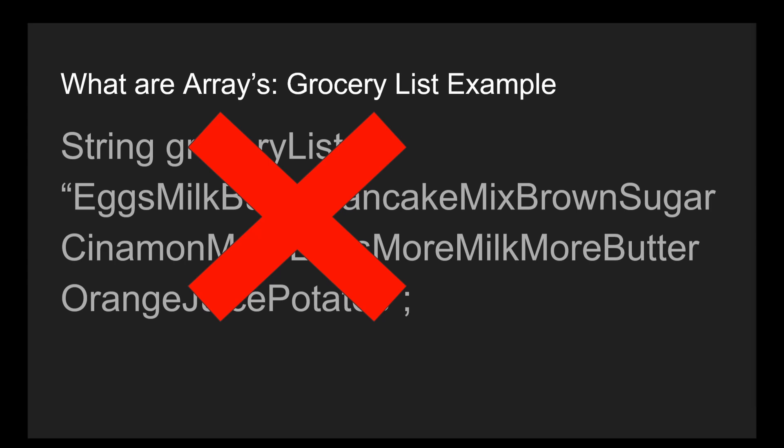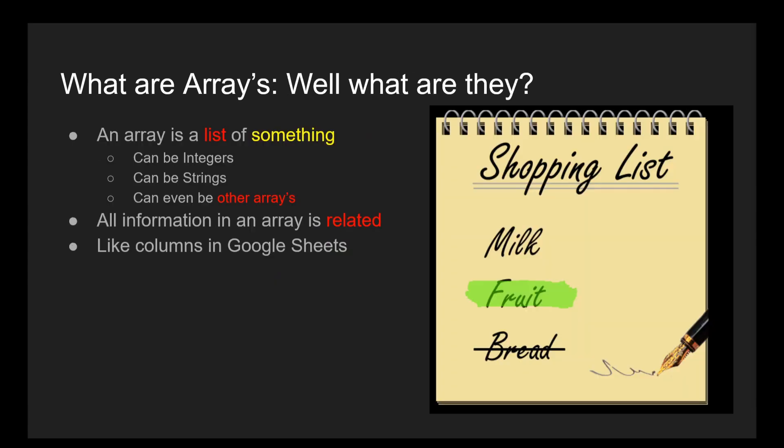This is the problem that using arrays solves for us. An array is, as you may have guessed, a list. You can have an array of integers, an array of strings, and even an array of other arrays, which is something we will cover in a minute. Programmers use arrays when they want to store a lot of variables containing information which is related to each other, such as a grocery list or a high score list in a game.